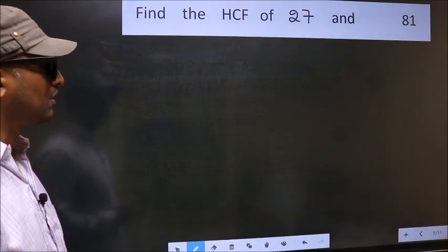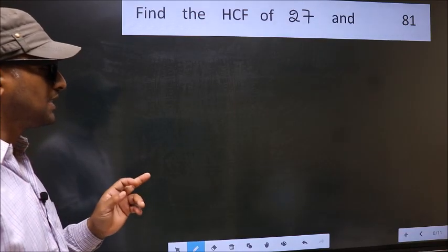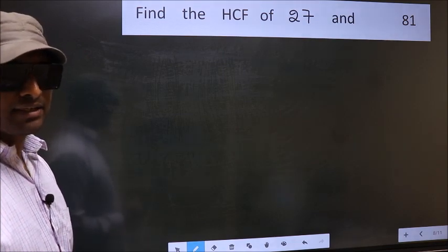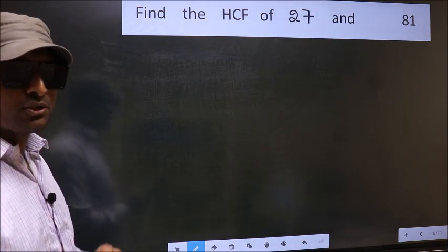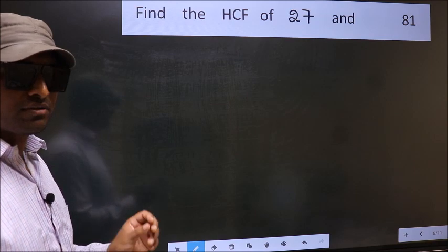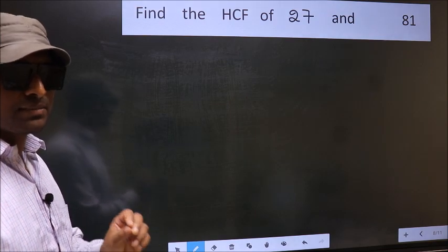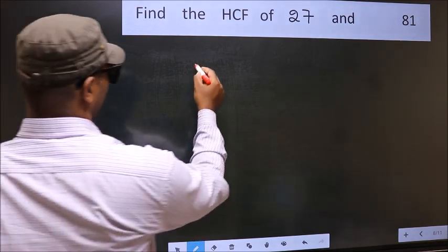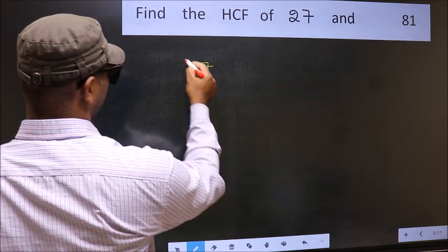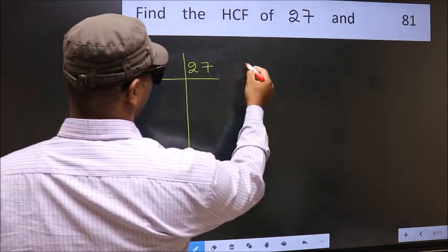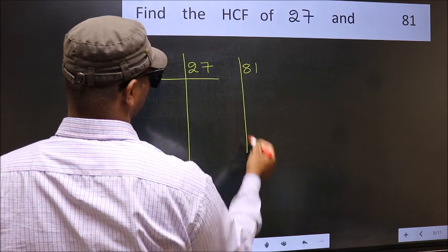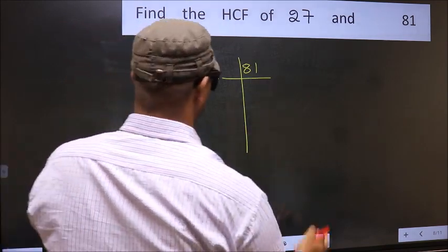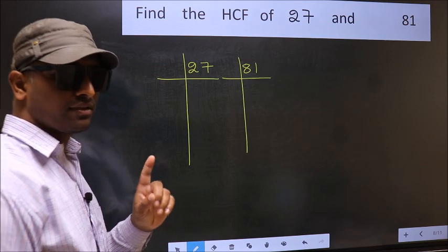Find the HCF of 27 and 81. To find the HCF, we should do the prime factorization of each number separately. This is Step 1.